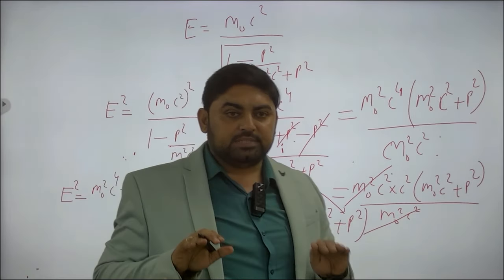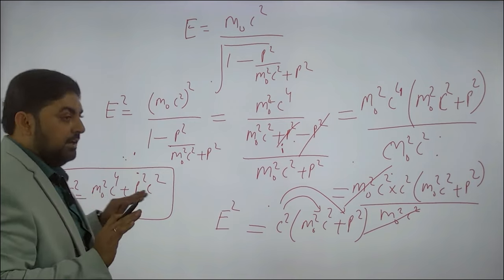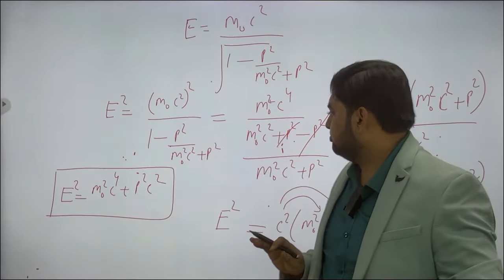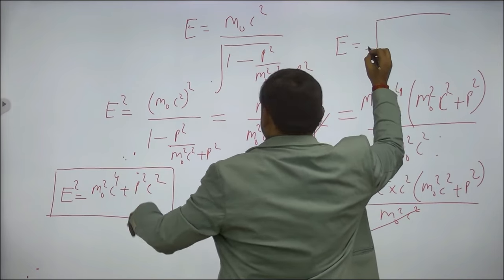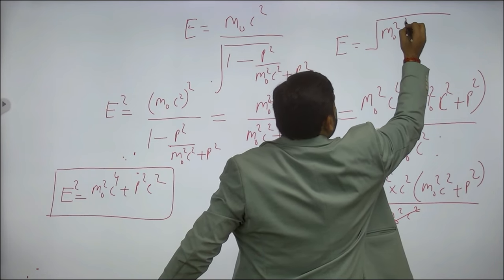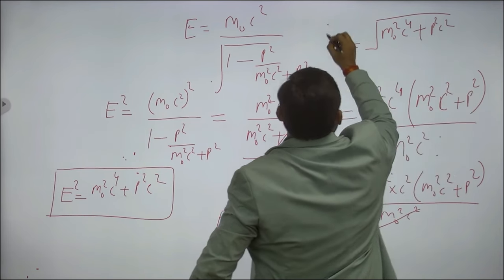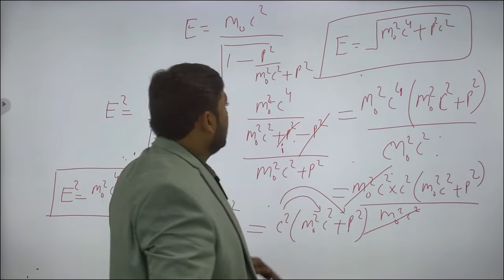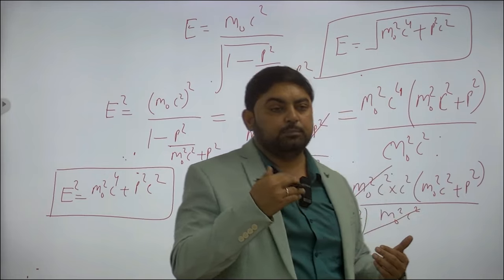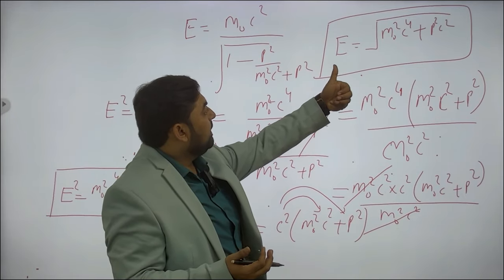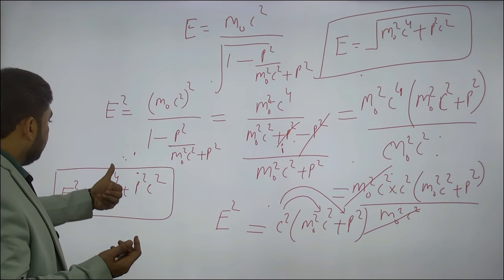We have derived the relation between relativistic energy and momentum: E² = M₀²C⁴ + P²C². We can also write this as E = √(M₀²C⁴ + P²C²). This expression is important when a particle has both energy and momentum, and we can apply this expression in such cases.